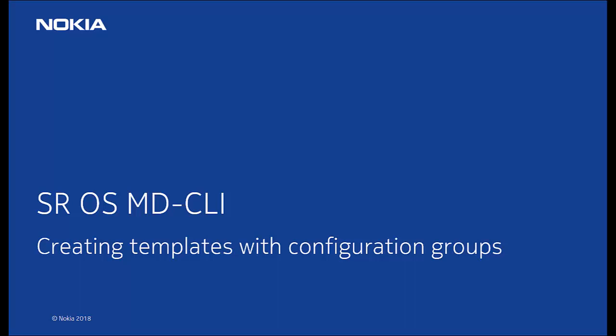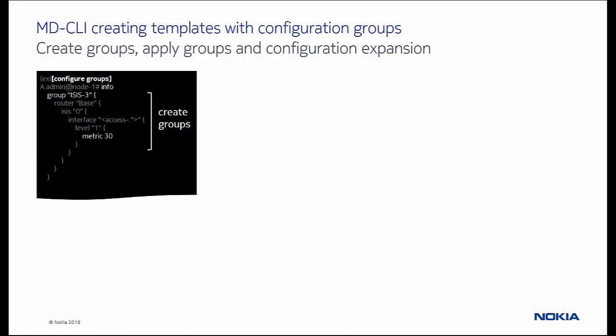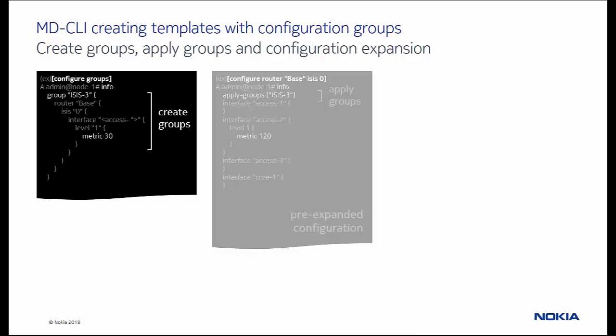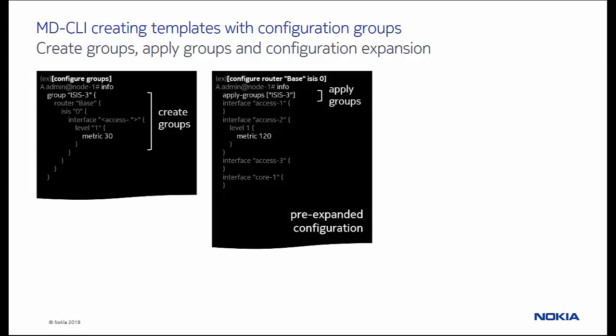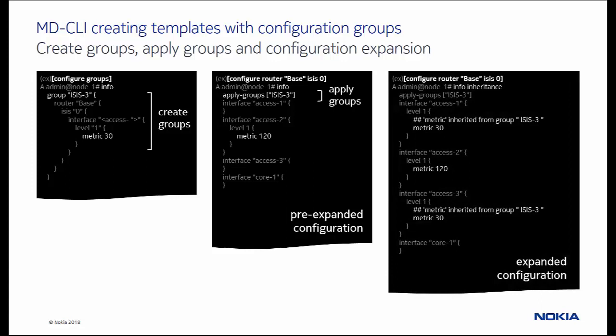Hello, and welcome to a series of videos on the model-driven CLI, which is being introduced in release 16.0.1. This video introduces configuration groups. A configuration group, also known as a template, is a collection of configuration statements that can be applied elsewhere in the configuration tree, where the configuration is expanded. Configuration groups ensure consistency, avoid repetition, and limit possible configuration errors across the network.